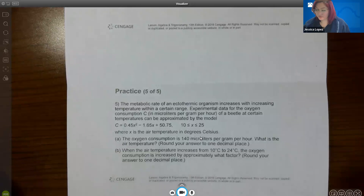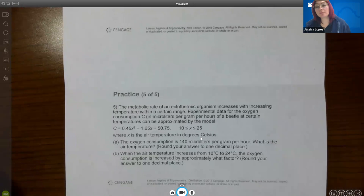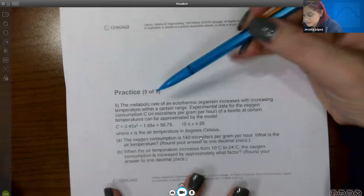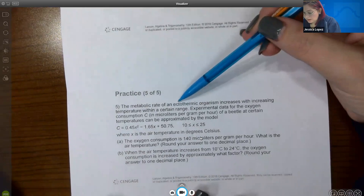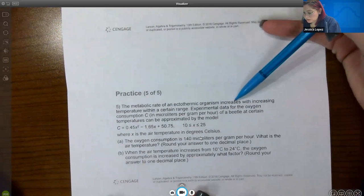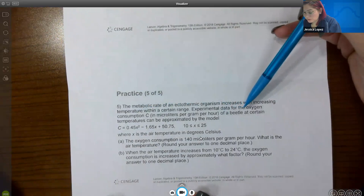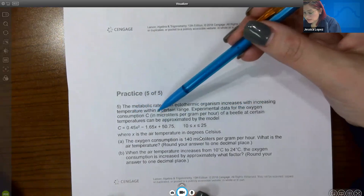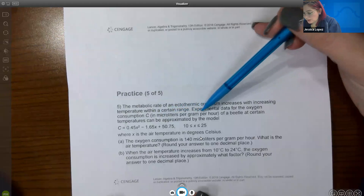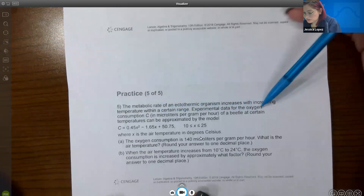Okay, so this is 1.4, 1.5 part two. I did miss an example in the original recording, so I'm going to go ahead and cover that example now. So for example five, it says the metabolic rate of an ectothermic organism increases with increasing temperature within a certain range. Experimental data for the oxygen consumption C in microliters per gram per hour of a beetle at certain temperatures